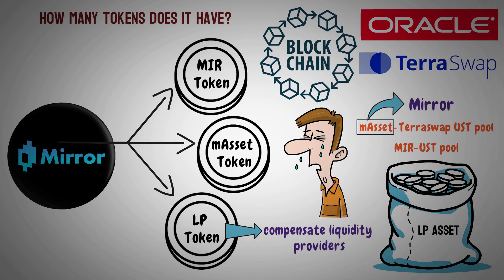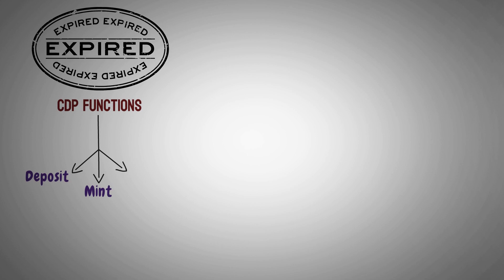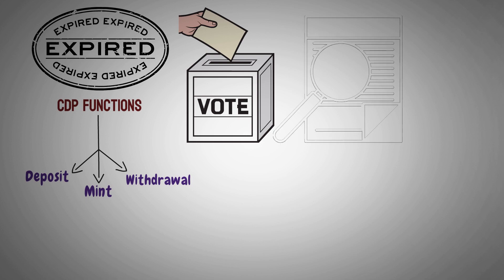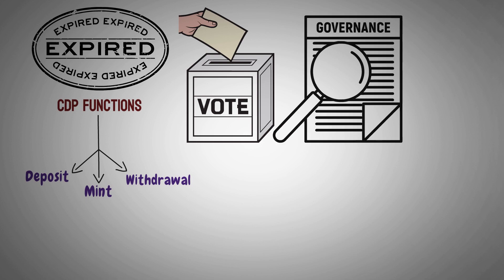However, the prices are deemed valid for just 60 seconds. Once data expires, Mirror will suspend CDP functions such as deposit, mint, and withdrawal until the price feed is restored. Finally, the Mirror token, the native asset of Mirror Protocol, must be staked to vote on ongoing polls and is needed as a deposit for initiating new governance polls.